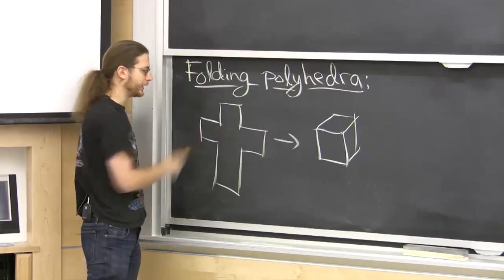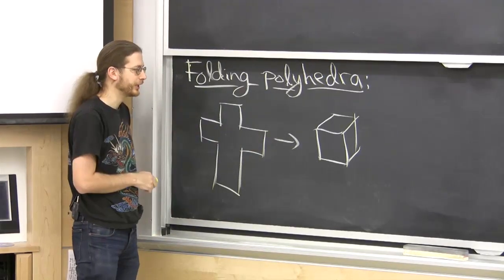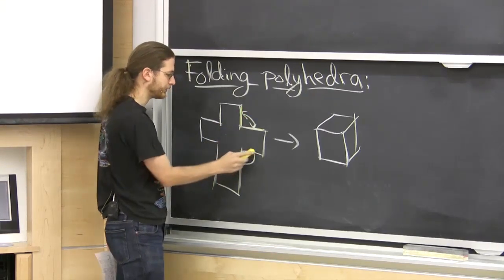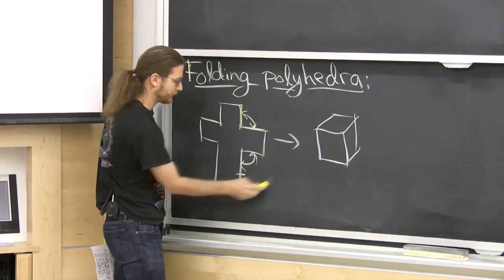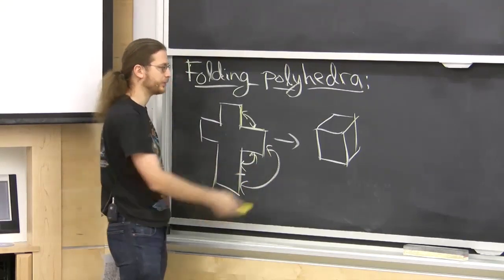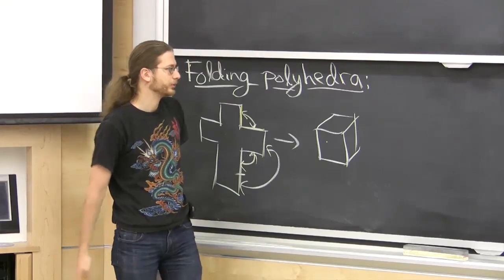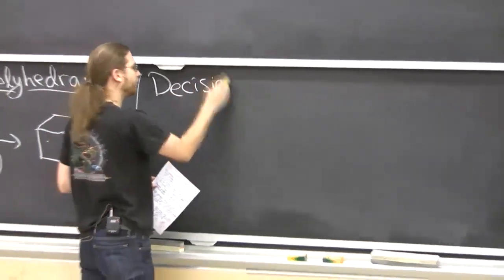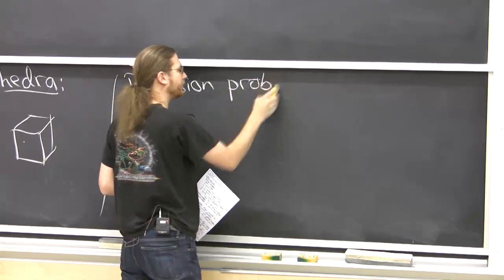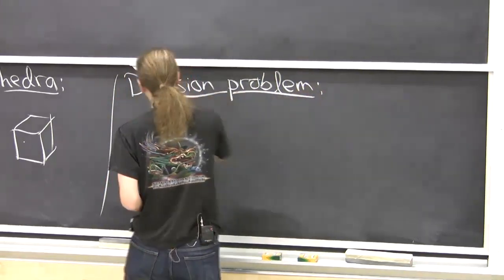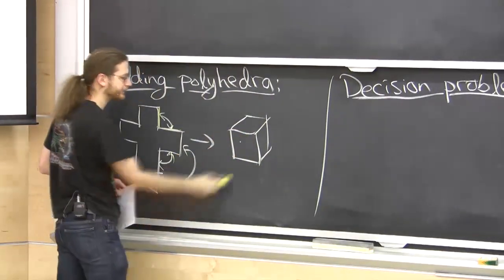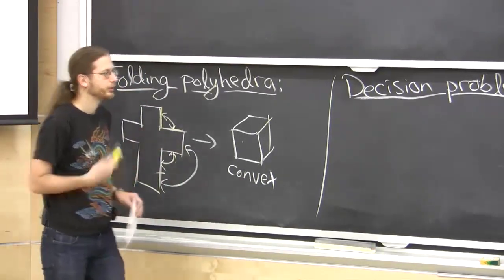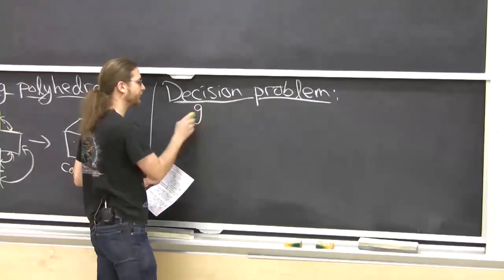So this is the problem. We're given some polygon. We're not told where to fold or how to glue it up necessarily. We'd like to find: is there some way to glue this boundary to itself in order to make a convex polyhedron? There are several versions of this problem. One is the decision version: I give you a polygon, I want to know, does it make any convex polyhedron? For the cross, the answer is yes. We will see examples later today where the answer is no — in fact, most of the time, the answer is no.